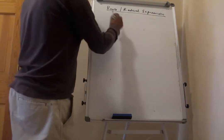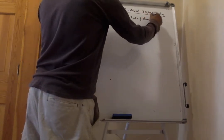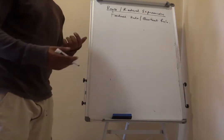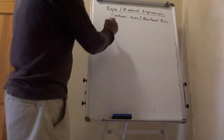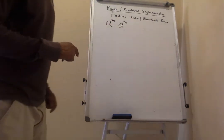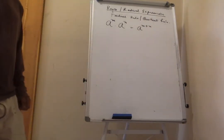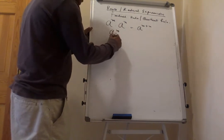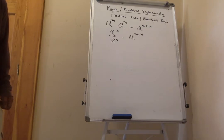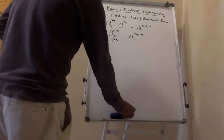There is the product rule and the quotient rule that we will use to simplify roots and radical expressions. The product rule: if you have the same base a raised to the m-th power multiplied by a raised to the n-th power, you add the exponents — giving a to the m plus n. The quotient rule: dividing a to the m by a to the n means subtracting the exponents.